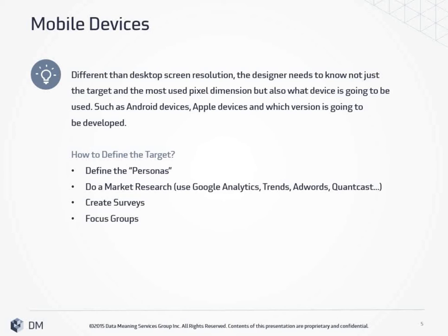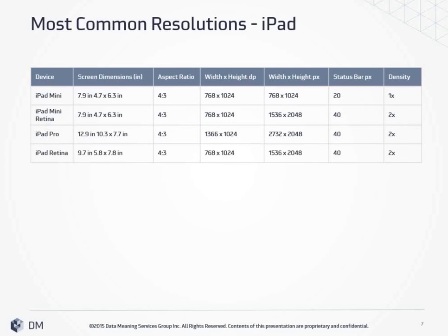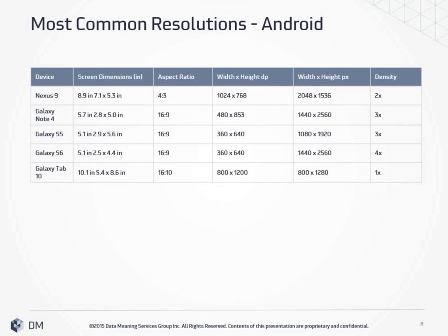Here are the most common resolutions for iPhone: iPhone 5s, iPhone 6, and iPhone 6 Plus. Here are the most common resolutions for iPad: iPad Mini, iPad Mini Retina, iPad Pro, and iPad Retina. And here are the most common resolutions for Android: Nexus 9, Galaxy Note 4, Galaxy S5, Galaxy S6, and Galaxy Tab 10.